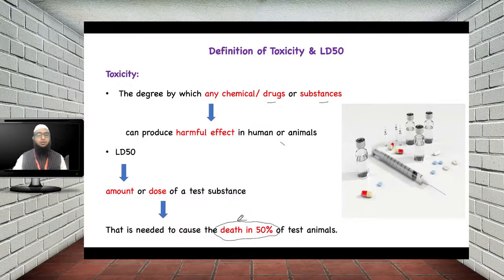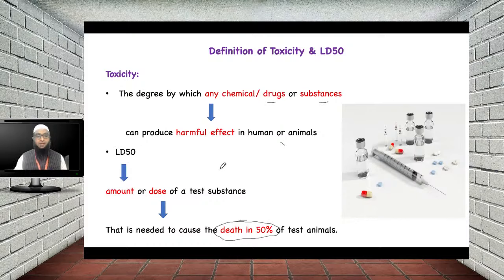For example, if you give a certain dose to 10 animals and 5 of them die — that is 50% of the animals — then that particular dose is the LD50 value. It is a very important parameter and an indicator of the toxicity of a drug.